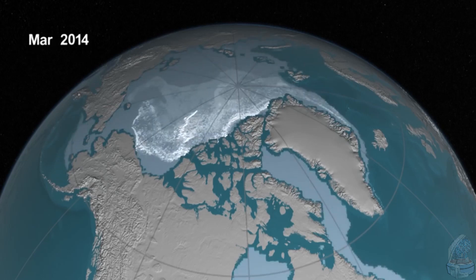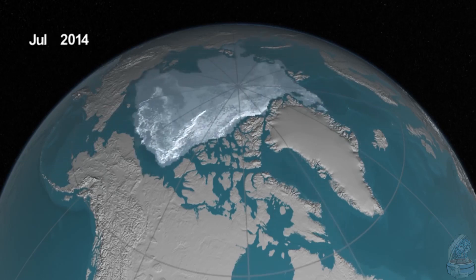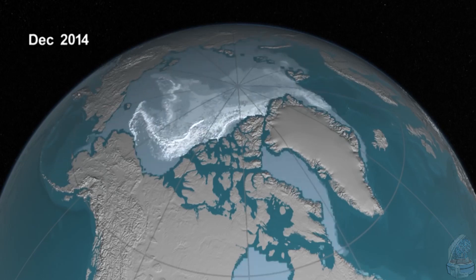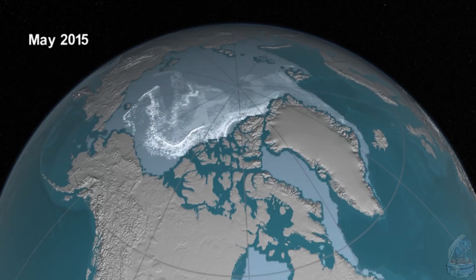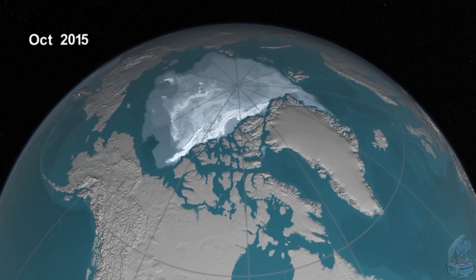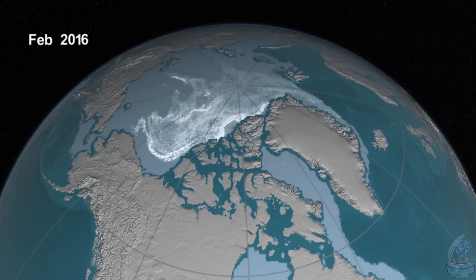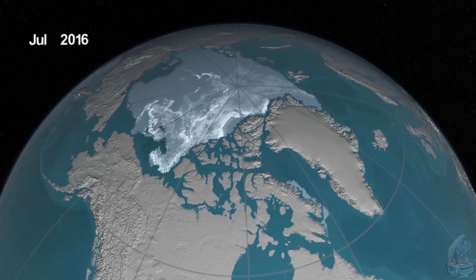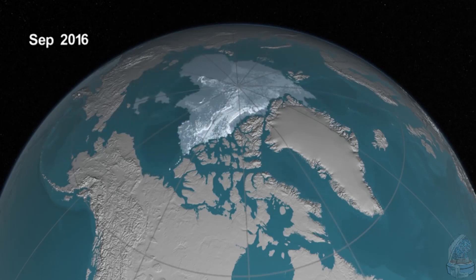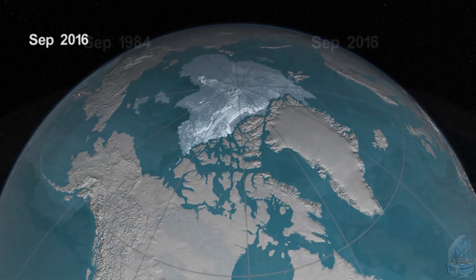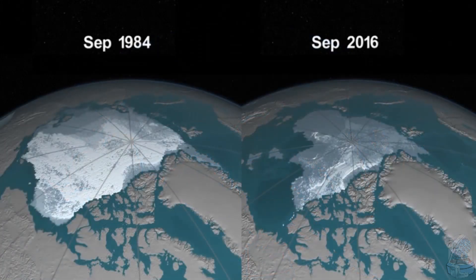As we get towards the more recent years, much of that oldest ice — the ice that's older than five years old, shown in bright white — has almost virtually disappeared from the Arctic Ocean. And the Arctic is now dominated by younger and thinner ice.